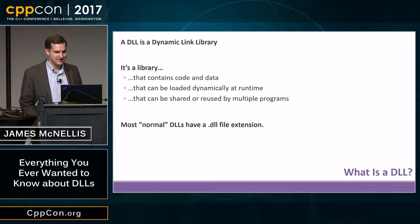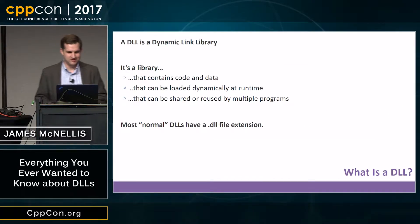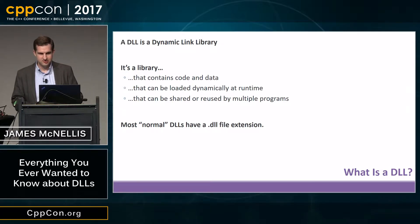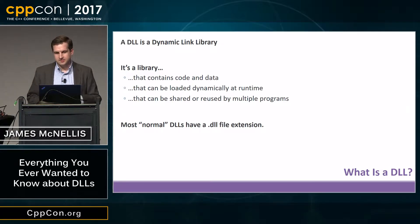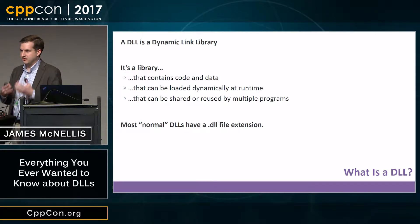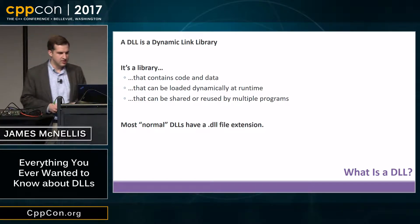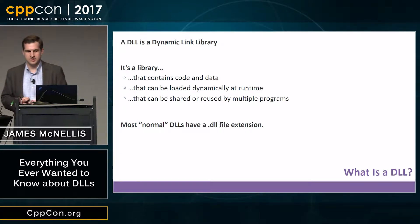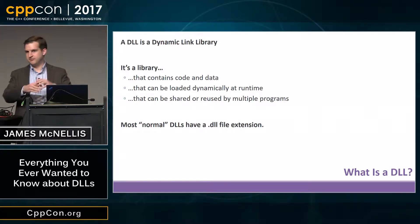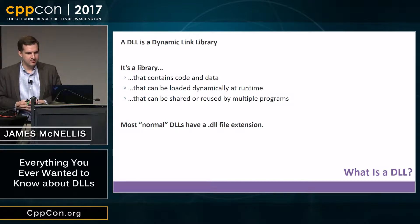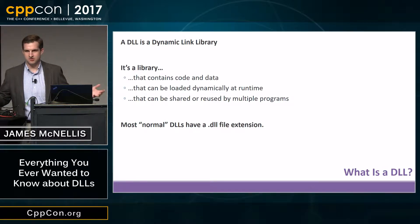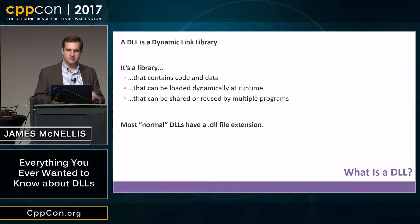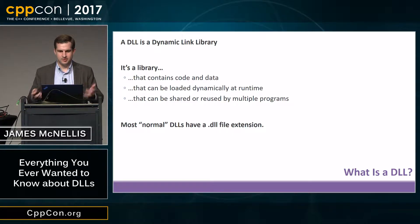So, what and why? A DLL is a Dynamic Link Library — it's a library that contains code and data, just like a static library, but it can be loaded dynamically at runtime. You don't have to link it into your program when you build it; you can choose whether or not to load it at runtime. Additionally, it can be shared or reused between multiple programs. A static library can also be shared, but if you distribute 20 programs linked against it, you end up with 20 copies of that code on disk. With DLLs, you only need one copy.